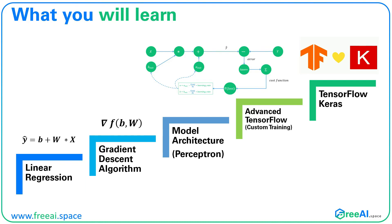Once we know linear regression and the gradient descent algorithm, we will build the model architecture in TensorFlow. The model architecture basically consists of one single perceptron, also known as a neuron.